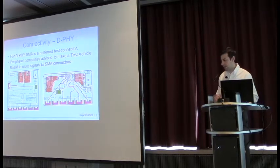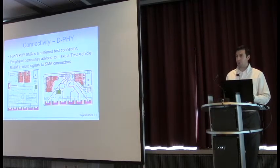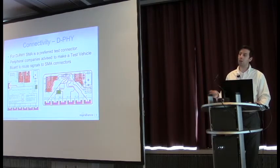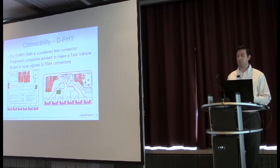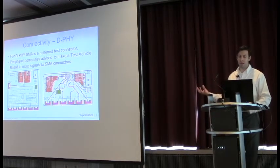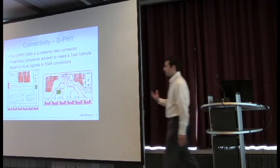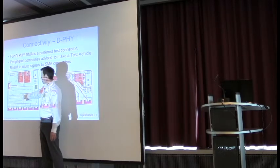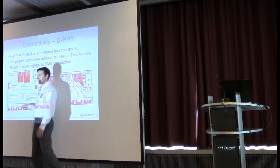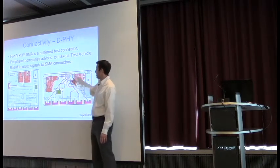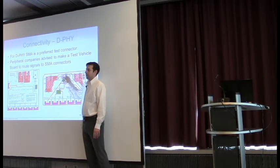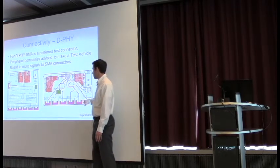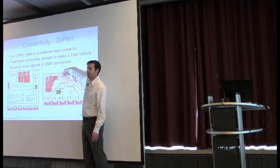For DFI connectivity, what we've recommended is to use an SMA connection for products, whether host side or peripheral side like a camera or display. On the peripheral side, we've recommended making a test vehicle board — essentially taking whatever the product is, such as a sensor, mounting it on a board in the middle, and performing whatever routing is needed out to SMA connectors. On the display side, it's the same idea: a low insertion force connector for FPC on the display routes to SMA connectors, and then you connect the display to it.